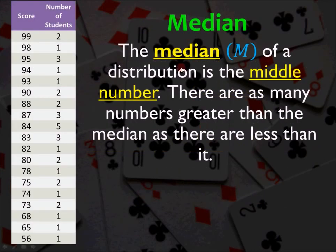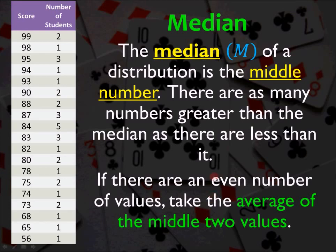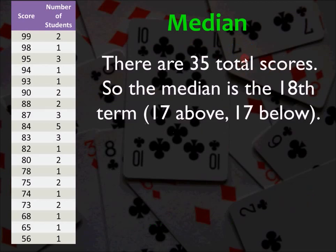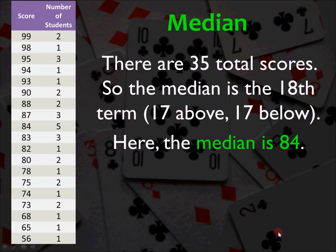So here's our list of test scores again. The median of a distribution is the middle number. There are as many numbers greater than the median as there are less than it. In other words, if you laid out all the numbers in numerical order, the median would be the one that's smack dab in the middle. Now, that's fine if you have an odd number of values because you're going to have a single value that has the same number of values above and below it. However, if there are an even number of values, you're going to take the middle two values because you're not going to have a single center value. You're going to take the middle two values and take the average of those two numbers. In other words, you're going to add them up and divide it by two. Now, one of the things that you'll see in this book is that there's no symbol for the median, but we're going to use the capital M because that's what most mathematicians and statisticians use. So here are the 35 total scores. So the median is the 18th term because there's 17 above it and 17 below it. In this case, the median is 84.